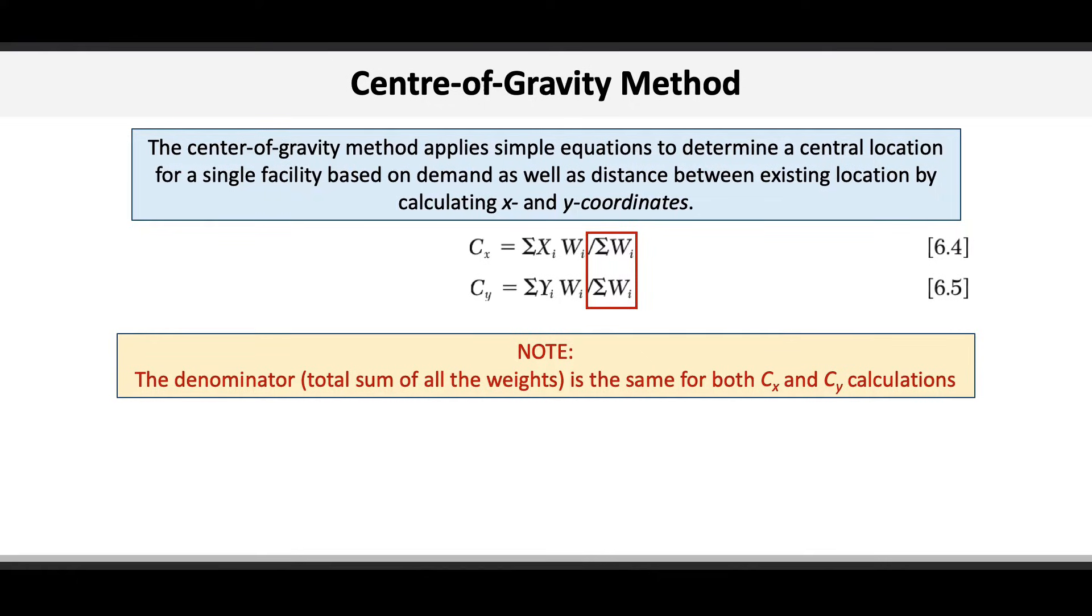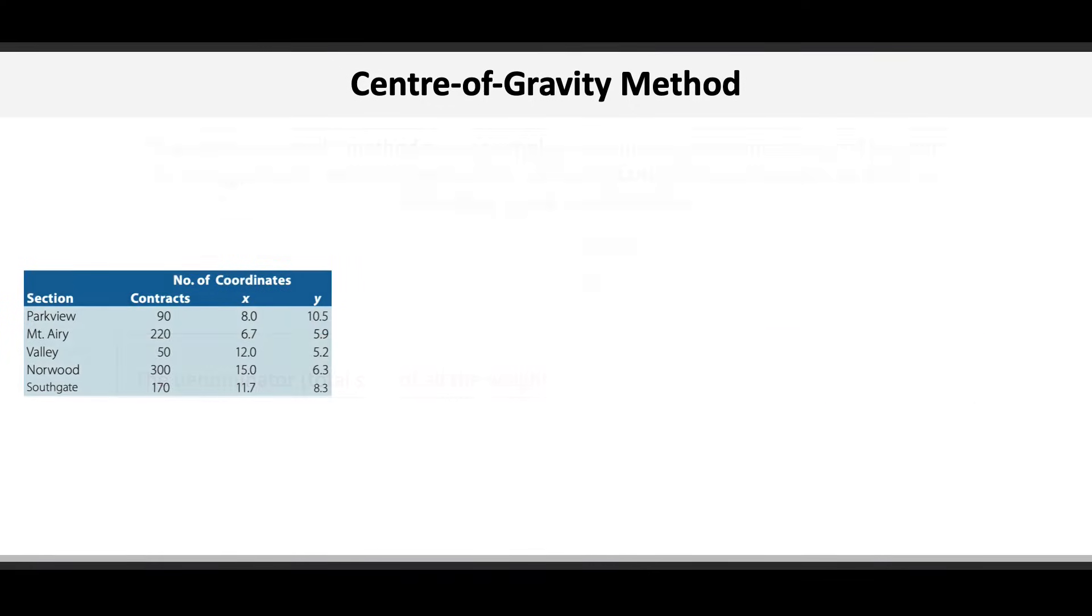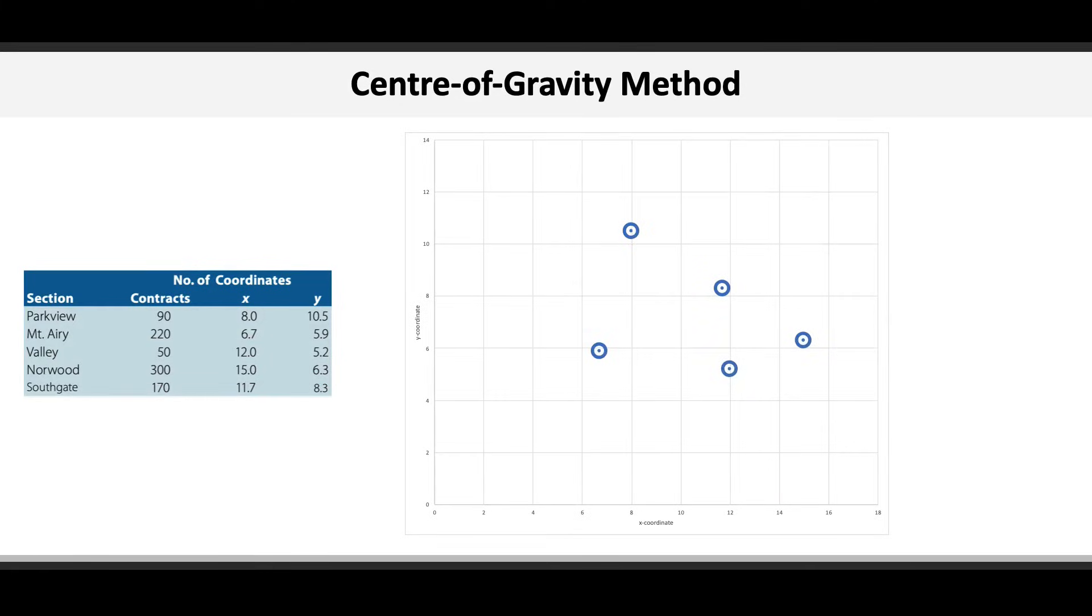So now let's get back to our problem. Here's that list of sections in the city again, with the number of contracts in each section and the coordinates of each section. Now if we were to overlay these on a map and plot the x, y coordinates on a grid, we can see where each area appears on a map.